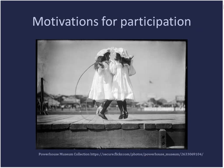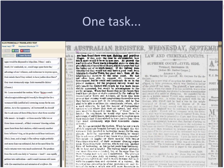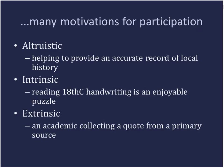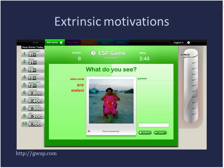There's a range of motivations for participation and I tend to group them into three. Taking this Trove task — correcting OCR errors from a newspaper and typing the correct words into a box — there are three potential motivation groups. First, people interested in Australian history who want to provide an accurate record of local history. Second, the puzzle of the task — correcting OCR is quite satisfying and neatly self-contained. Third, people collecting quotes from a primary source. Other extrinsic motivations might be playing games where helping an organization is just a nice side effect.